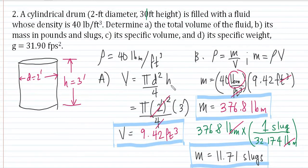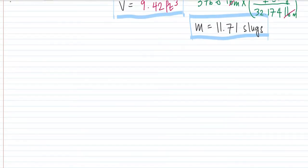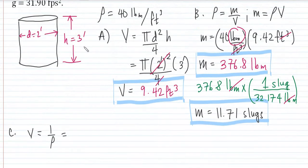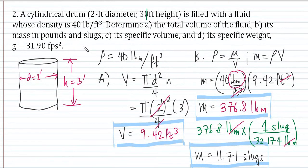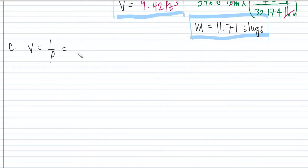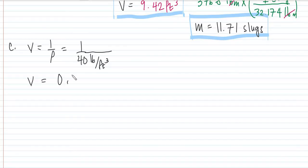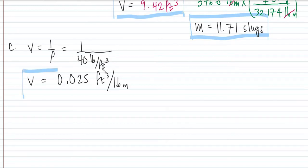Letter C: find the specific volume. Again, specific volume is simply the reciprocal of density. So specific volume equals 1 over rho equals 1 over 40 pound mass per cubic foot, which gives 0.025 cubic feet per pound mass.